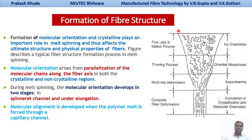Initially, just after the polymeric fluid comes out of the spinneret, there is no orientation in the filament — the polymeric chains are not oriented along the fiber direction; they are free jets of molten polymer. Molecular orientation and crystallinity play important roles in melt spinning and ultimately affect the structure and physical properties of the fiber. Molecular orientation arises by the parallelization of molecular chains along the fiber axis in both crystalline and non-crystalline regions.